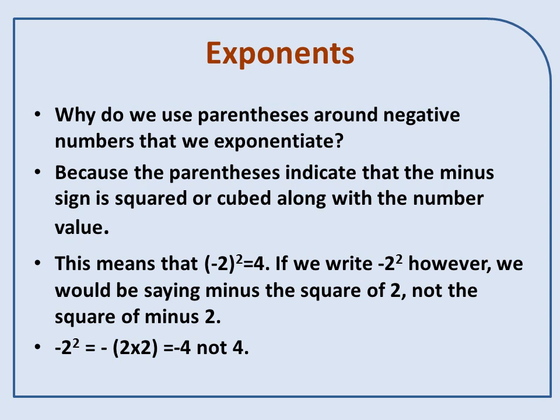That means that parentheses minus 2 squared equals 4. If we write minus 2 squared without the parentheses, however, we would be saying minus the square of 2, not the square of minus 2. So minus 2 squared is minus 2 times 2 equals minus 4, not 4.